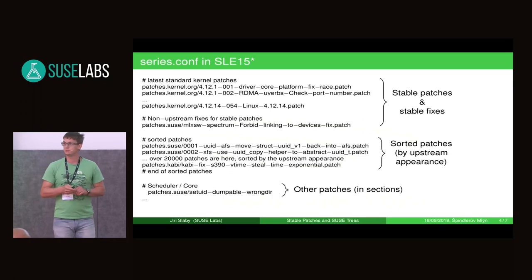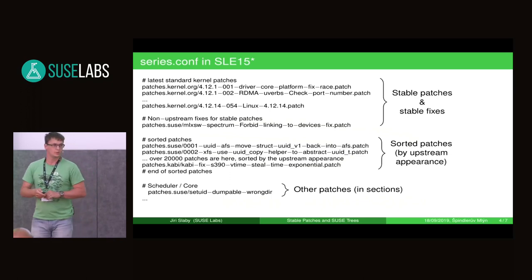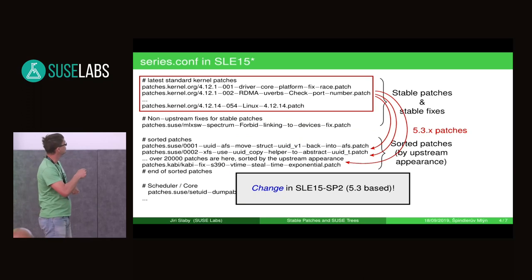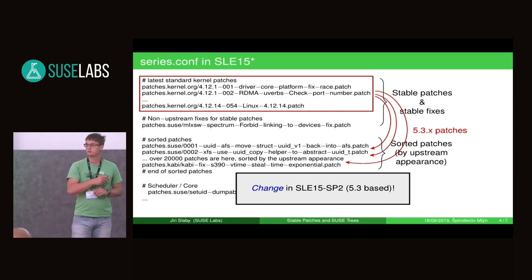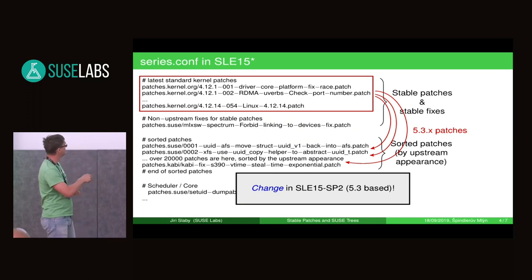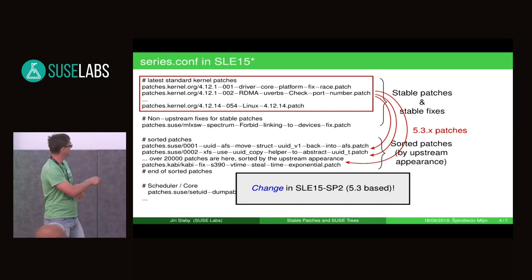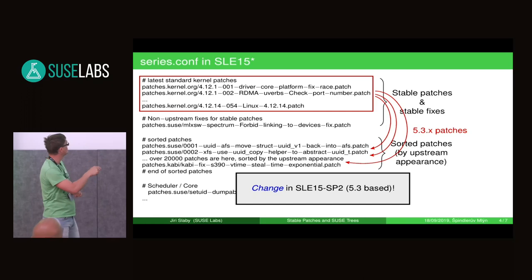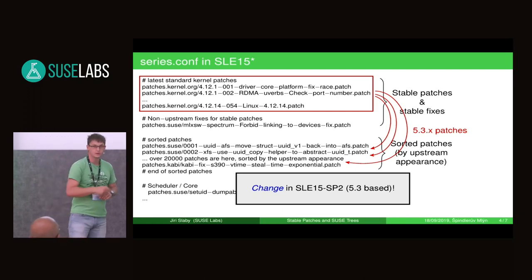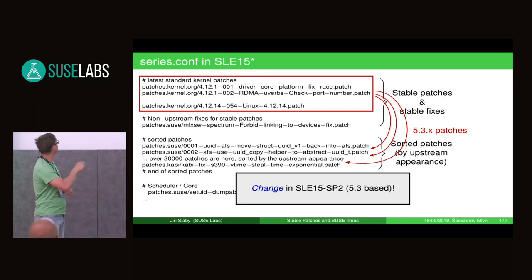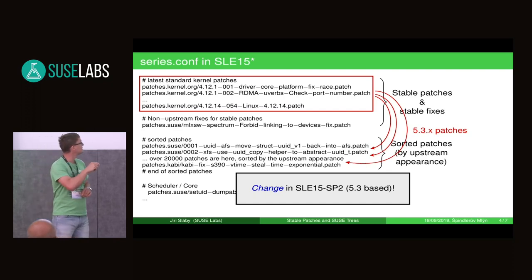What's going to happen — and what we have been discussing lately — is the change in SLE 15 SP2. What will happen there is that we will take all the stable patches too, but we won't put them at the beginning of the file. We will put them as other patches in between somewhere in the sorted section. Note it's a 5.3 based kernel, so the stable patches won't be 4.12.1 and so on — they will be 5.3 something. But the concept you can see there. The change is that we won't have this part of the series.conf file — every stable patch will be sorted as any other upstream patch in the sorted section.